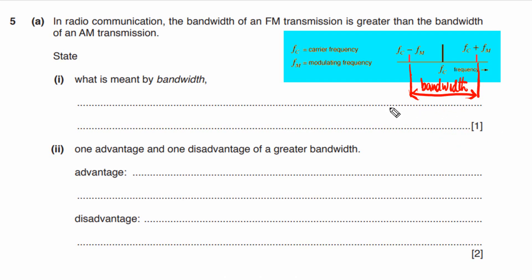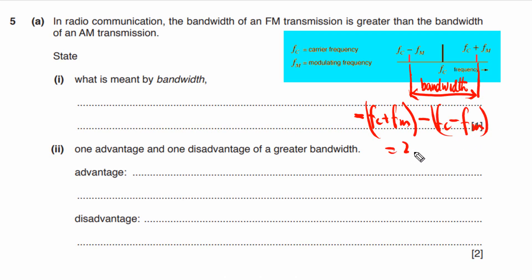Now let's calculate bandwidth. Bandwidth equals the frequency of the upper sideband minus the frequency of the lower sideband. If we subtract, we get bandwidth = 2 × fm, that is two times the frequency of the information signal. This is a very important point: even if the frequency of the carrier wave is not given, you can still calculate bandwidth by simply multiplying the signal frequency by two.